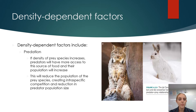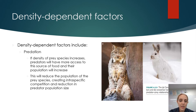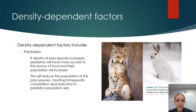Another density dependent factor is predation. If we increase the density of prey species — for example, hares in the image — then the predator, the lynx, has more access to food, so the lynx population increases. As the lynx population increases, intraspecific competition rises and the hare numbers start to decrease, so we see a correlation between the two populations.